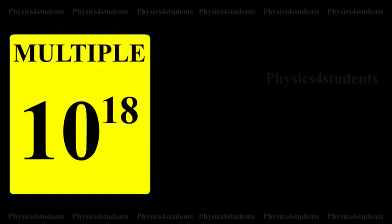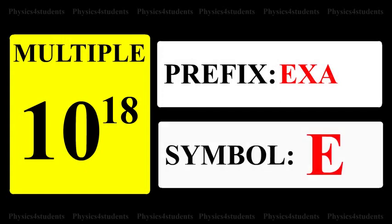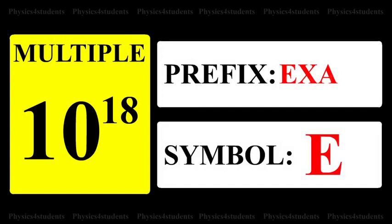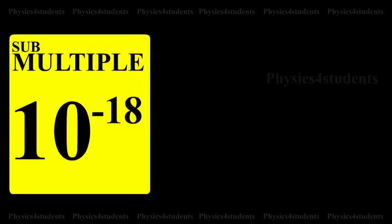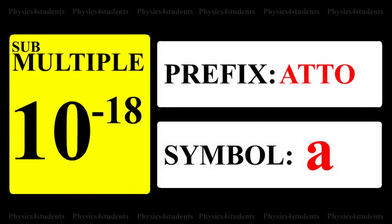10 raised to 18: prefix is Exa, symbol is E. Submultiple is 10 raised to minus 18: prefix is Atto, symbol is A.